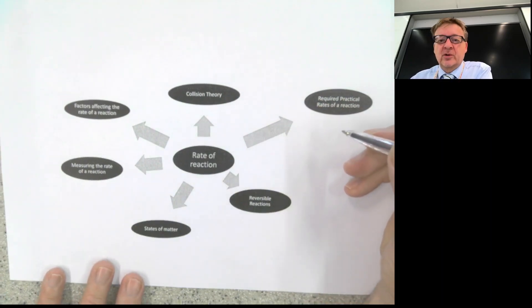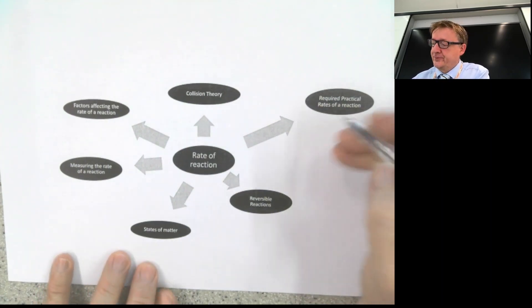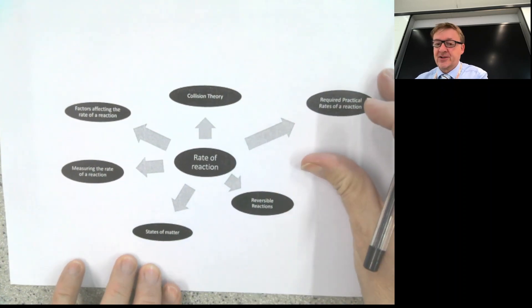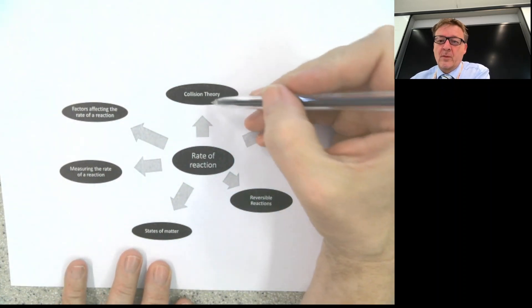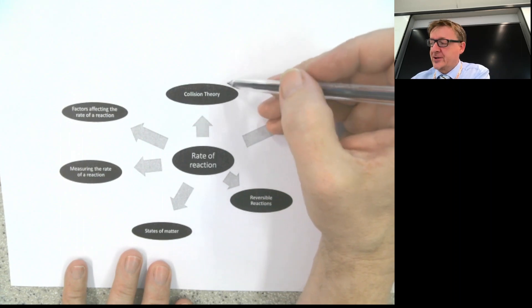Right, so this mind map is all about rates of reaction. And what I'm going to do is I'm going to start off with collision theory. Collision theory is what must happen for a reaction to happen.